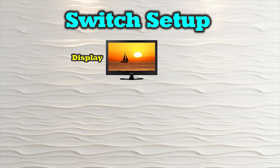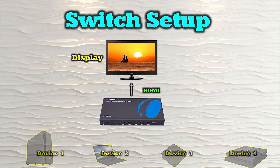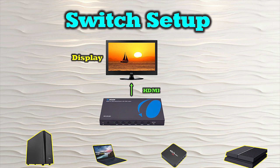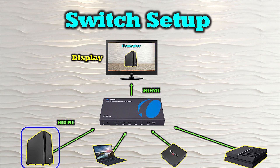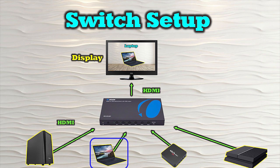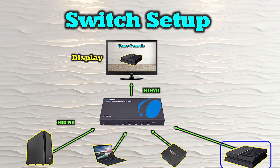An HDMI switch allows you to share a single monitor with multiple media devices. You simply connect the switch to your display with a single HDMI cable. These switches are available to support different numbers of input devices — in this example we're using a four-input version with a computer, a laptop, a media streamer, and a game console. You connect these devices to the switch using a separate HDMI cable for each. To view content from your computer, use the button to choose that input. Switching to another device is as easy as pushing the selection button a few more times to cycle through.